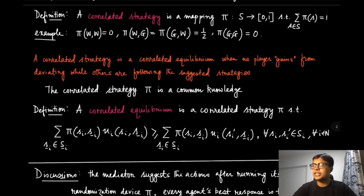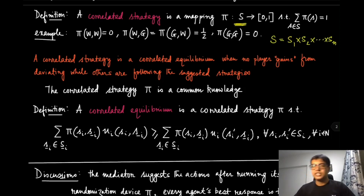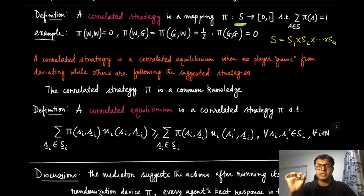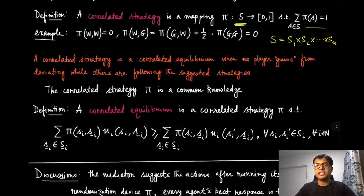When the strategies are enforceable, it becomes an equilibrium which we call the correlated equilibrium. A correlated strategy is essentially a mapping from the set of strategy profiles S — which is the Cartesian product S1 × S2 × ... × Sn for n players — assigning probability masses over the entire strategy profile. The function pi assigns values between zero and one, and the sum over all strategy profiles of pi equals one.